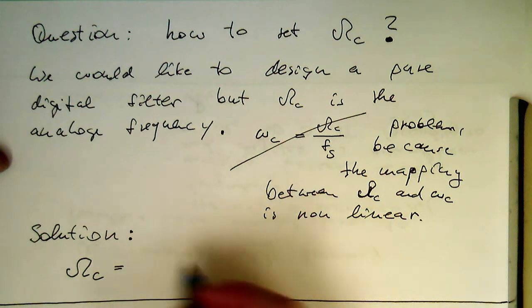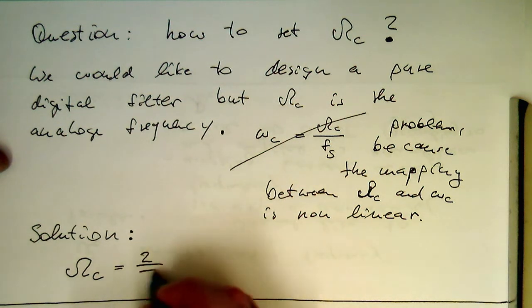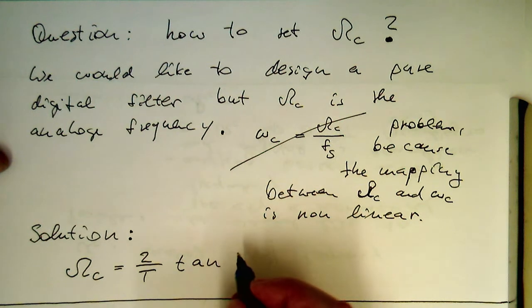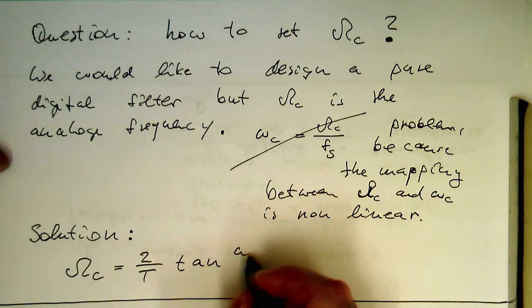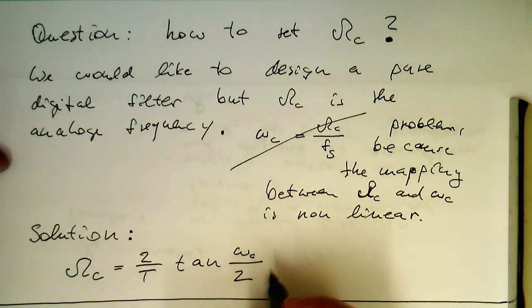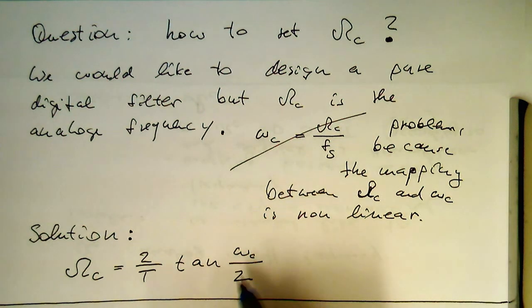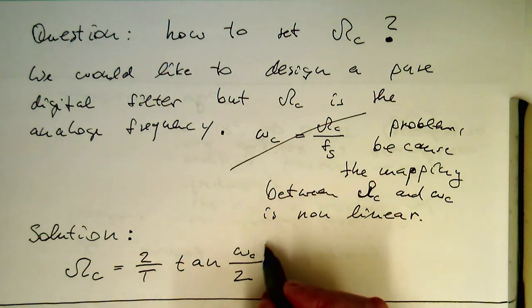which was omega_c equals 2 divided by T, and then tangent of omega_c divided by 2. So this was our mapping between the digital frequencies here.